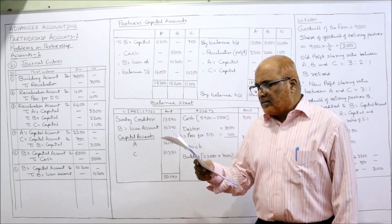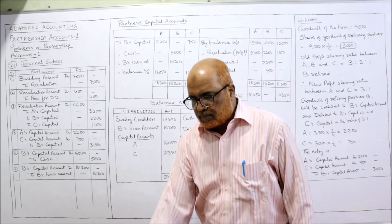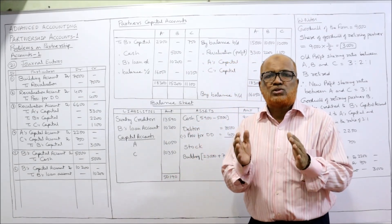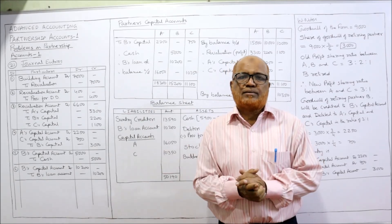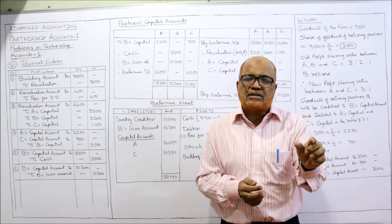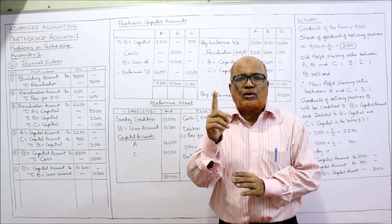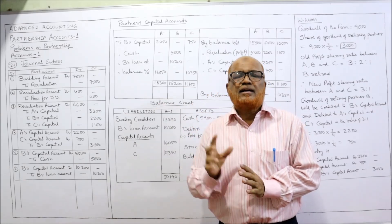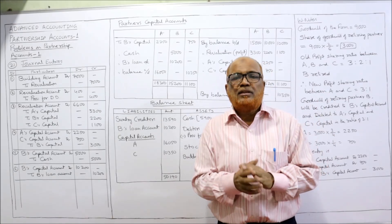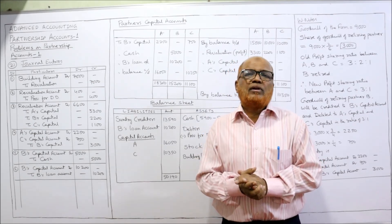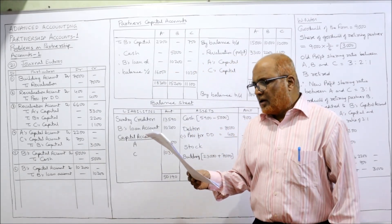Goodwill of the firm is valued at 9,000 and an adjustment in this respect be made without raising a goodwill account. In the case of retirement of a partner, don't debit the goodwill account. Whatever share of goodwill the retiring partner will get will be adjusted in the capital accounts of all partners. The goodwill due to retiring partner B will be credited to B's capital account, and debit will be given to the continuing partners in the new profit sharing ratio.